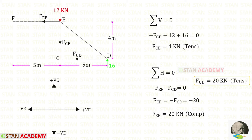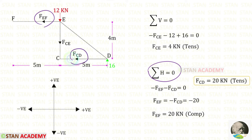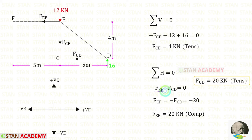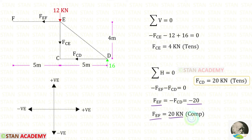Now let us use sigma H equals zero. There are only two horizontal forces: FEF and FCD. Both are acting towards the left side, so both are negative. We can take FEF to the other side, making it positive. We know the value of FCD is 20, which is tensile — let us apply that. For FEF we get a negative value, meaning it is compressive.